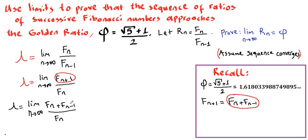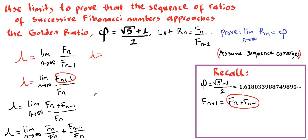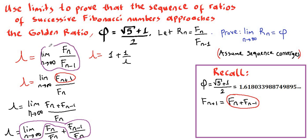Now we can separate this fraction because we have a common denominator. So the limit as n goes to infinity of f sub n plus f sub n minus 1 divided by f sub n gives us f sub n divided by f sub n, which is 1, plus the limit of f sub n minus 1 divided by f sub n, which is 1 over lambda. Because if the limit of f sub n divided by f sub n minus 1 is lambda, then flipping the fraction gives 1 over lambda.